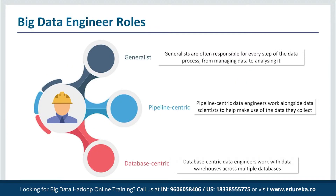There are typically three kinds of roles that a big data engineer has to assume. First, we have the generalist. Generalists are typically found on small teams or in small companies. In this setting, data engineers wear many hats as one of the few data-focused people in a company. Generalists are often responsible for each step of the data process, from managing data to analyzing it.